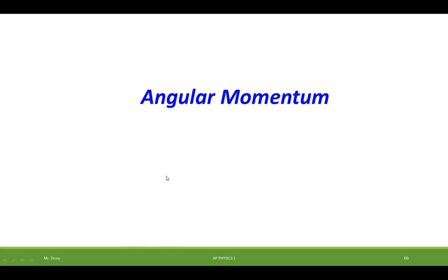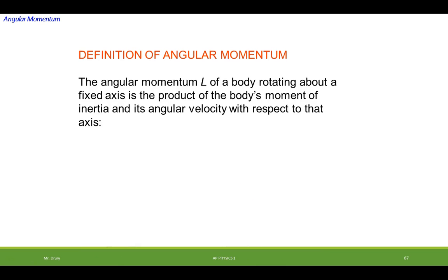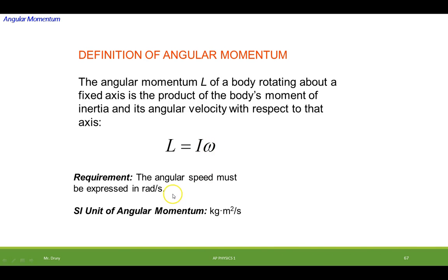Today I'll be talking about angular momentum. The angular momentum L of a body rotating about a fixed axis is a product of the body's moment of inertia and its angular velocity with respect to that axis. So the angular momentum is equal to moment of inertia times the angular velocity. Remember, angular velocity has to be in radians per second, and the units for angular momentum would be kilogram meters squared per second.